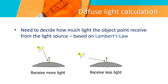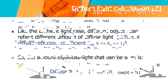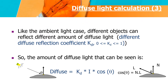Diffuse Light Calculations need to decide how much light the object receives from the light source, based on Lambert's Law. Lambert's Law describes the radiant energy that a small surface patch receives from a light source. The formula is given below. Like the ambient light case, different objects can reflect different amounts of diffuse light. The formula is given below.